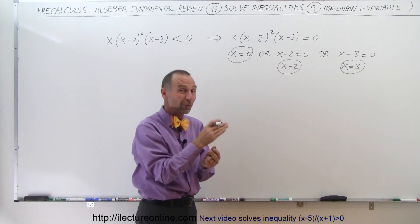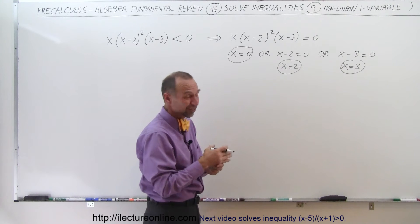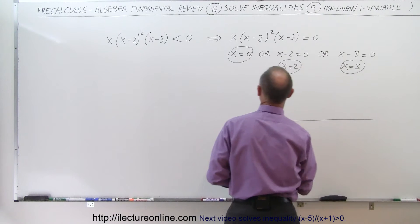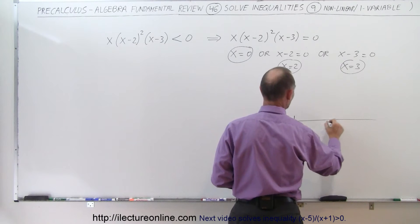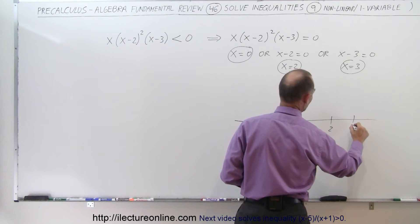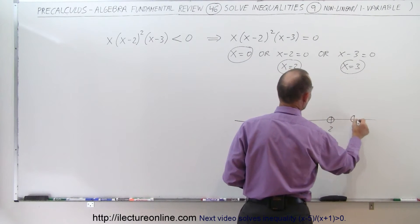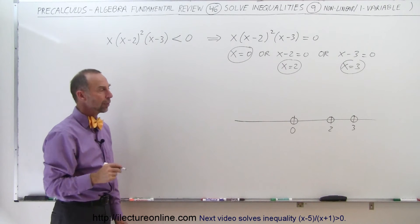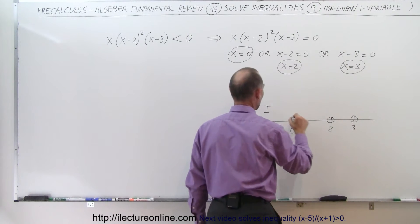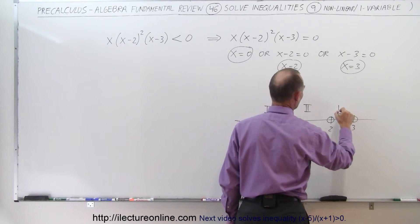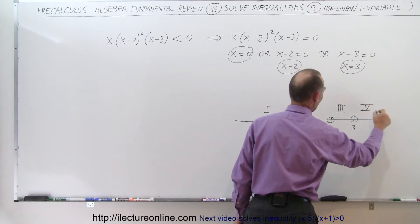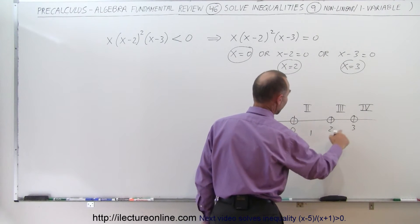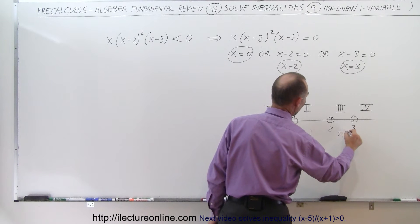The critical points define the boundary between regions that satisfy and regions that do not satisfy the inequality. We place them on the number line: X equals zero, X equals 2, and X equals 3. Those three points are not included in the solution since there is no equal symbol. This gives us four regions. We choose test points in each region — for example, negative 1, positive 1, 2.5, and 4.